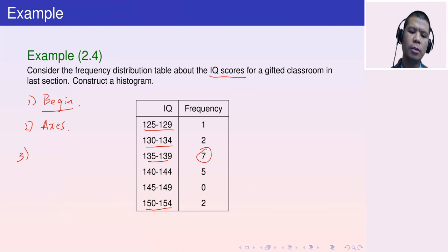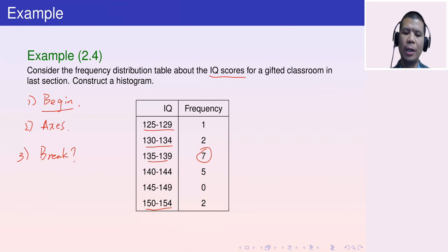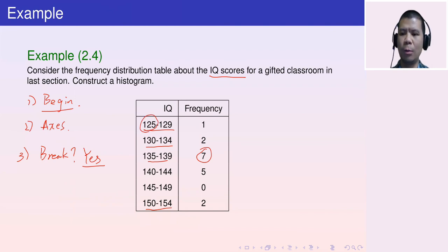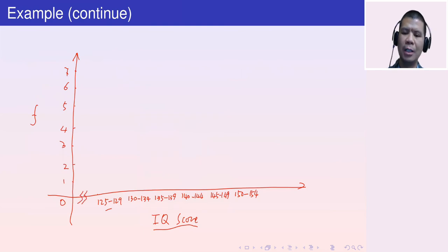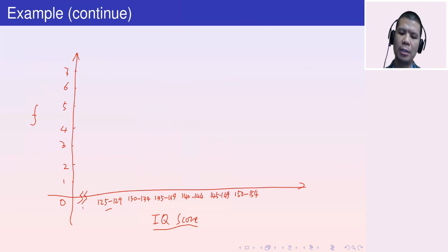Step three: add a break sign because our starting value is 125, not zero. Step four: draw vertical lines at the edges to separate the intervals.